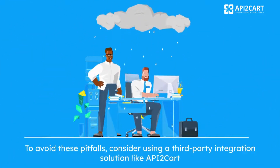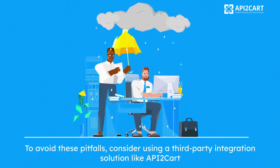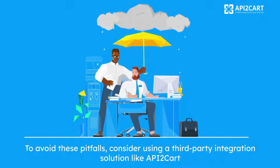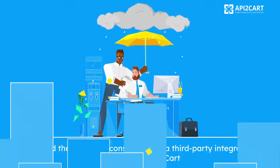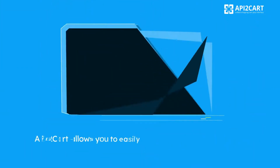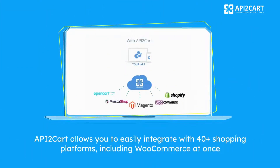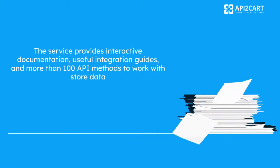To avoid these pitfalls, consider using a third-party integration solution like API2Cart. API2Cart allows you to easily integrate with 40-plus shopping platforms, including WooCommerce, all at once. The service provides interactive documentation, useful integration guides, and more than 100 API methods to work with store data.